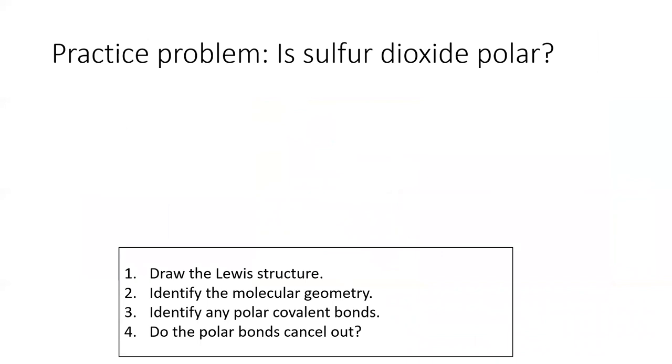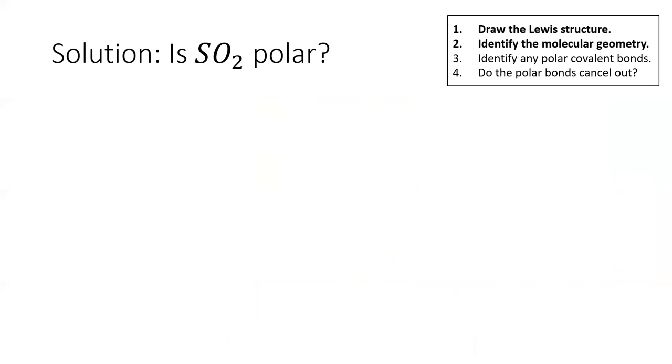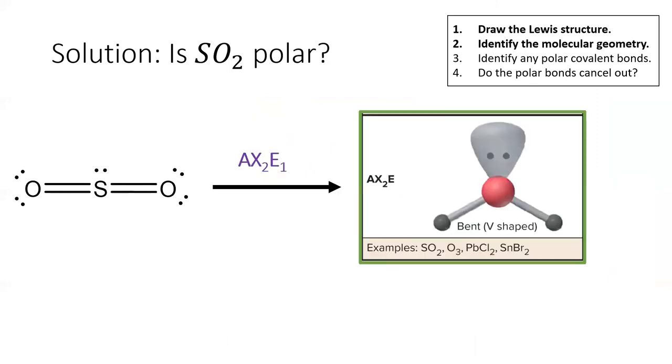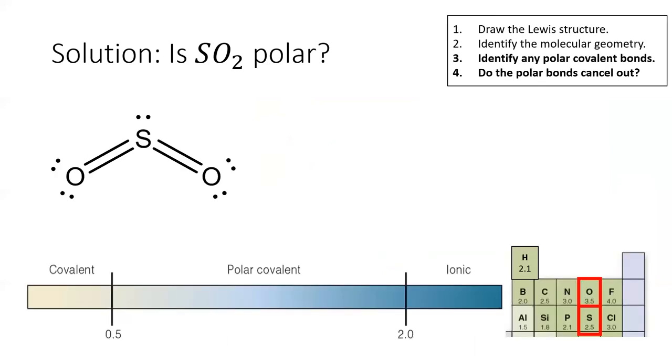Here's the last practice problem. Is sulfur dioxide a polar molecule? Of course, the first step is drawing a valid Lewis structure. When we do, we see that the central atom makes two bonds and has one lone pair. This is AX2E1, which corresponds to a bent geometry. Next, we consult the element electronegativities to identify any polar bonds. Sulfur and oxygen have a difference in electronegativity of one, so they make a polar covalent bond.